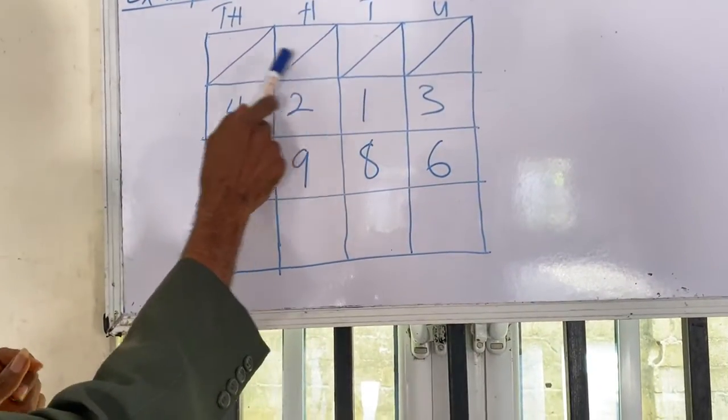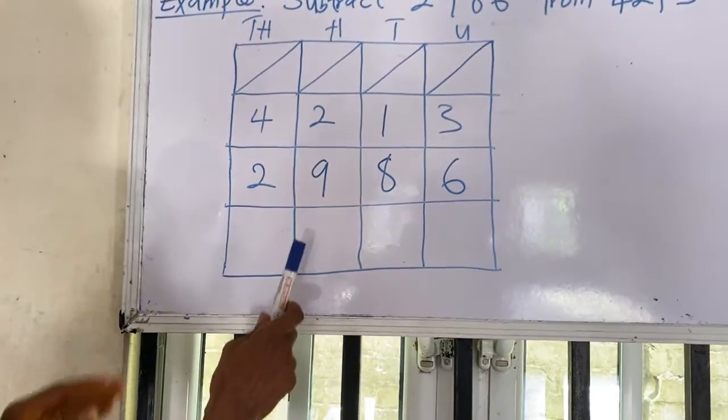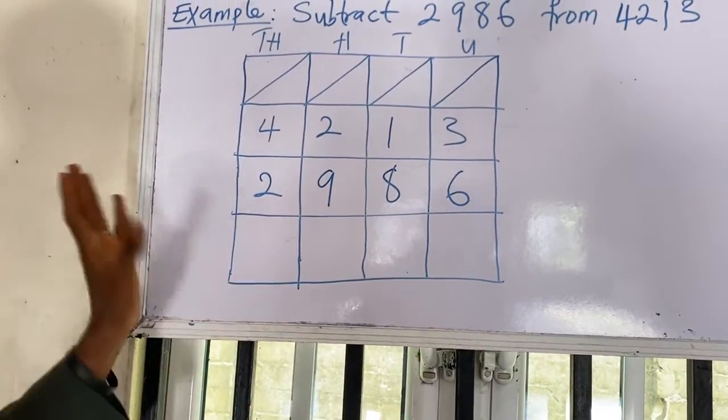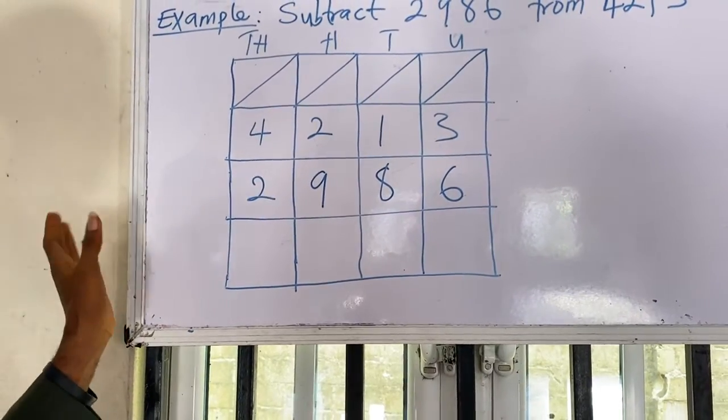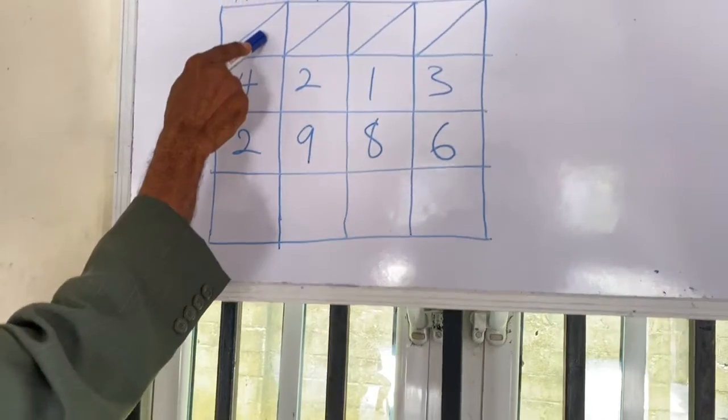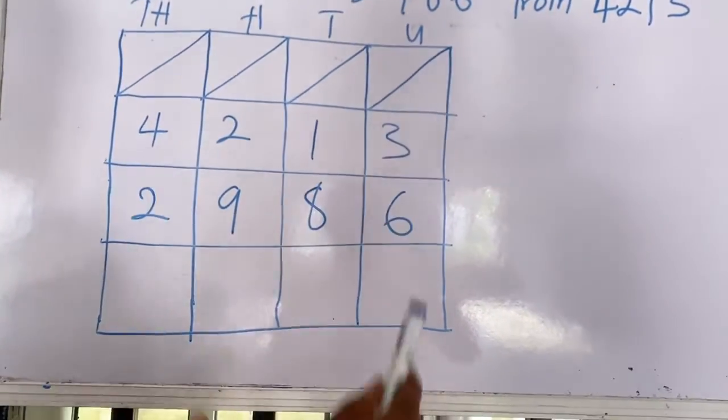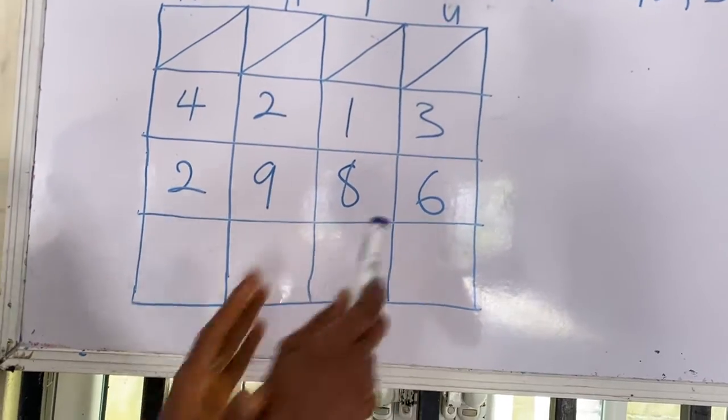Then on the top, at the top here you draw your diagonal line. This is different from multiplication or addition. This is where your diagonal will be. Your diagonal will be up. Down is for your answer. Let's go.